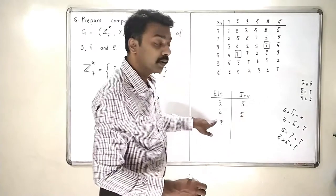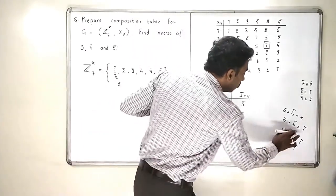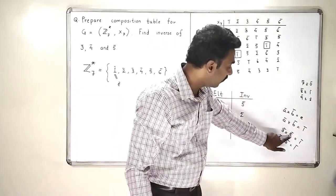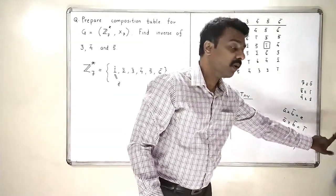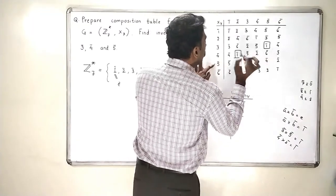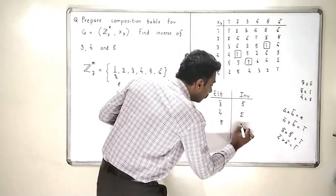And what is inverse of 5 bar? Now, we know that 3 bar into 5 bar is 1 bar. And therefore, 5 bar into 3 bar will be also 1 bar. You check here. 5 bar into 3 bar is also 1 bar. So, inverse of 5 bar is 3 bar.